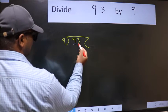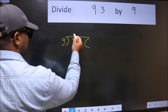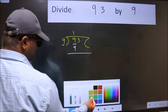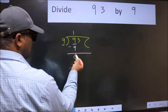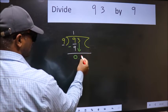Here we have 9 and here 9. When do we get 9 in 9 table? 9 once 9. Now we should subtract. We get 0. After this, bring down the beside number. So 3 down.